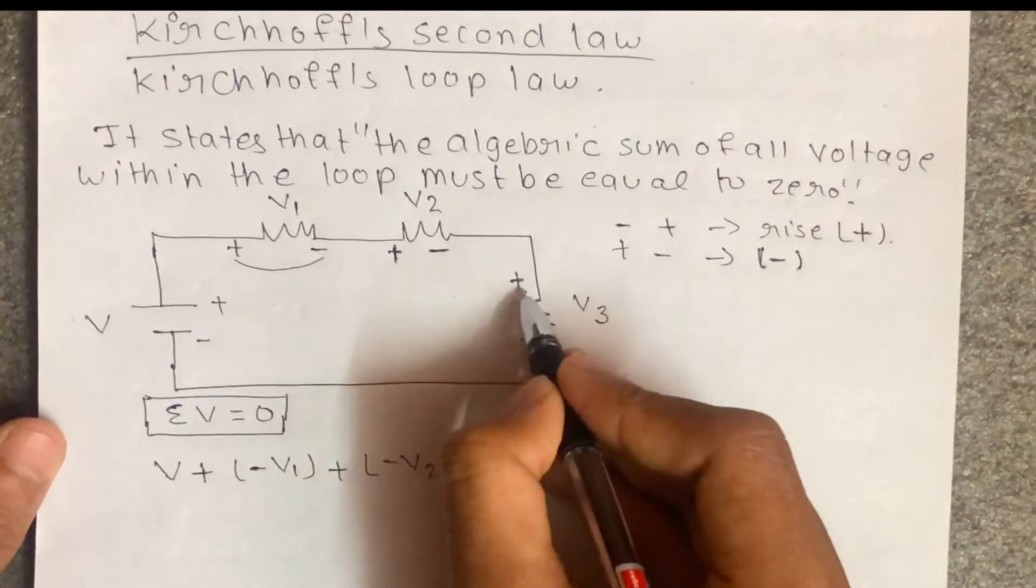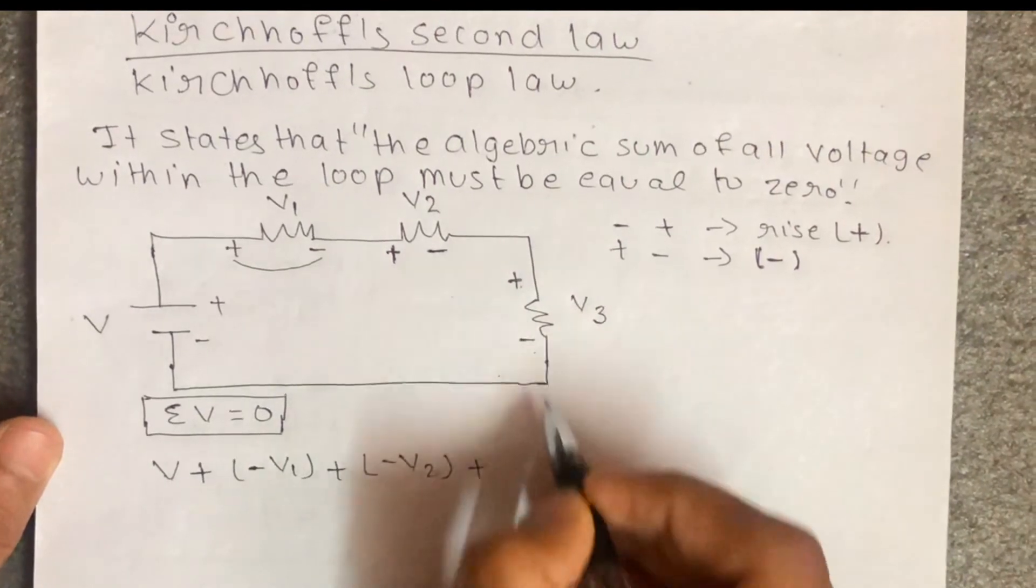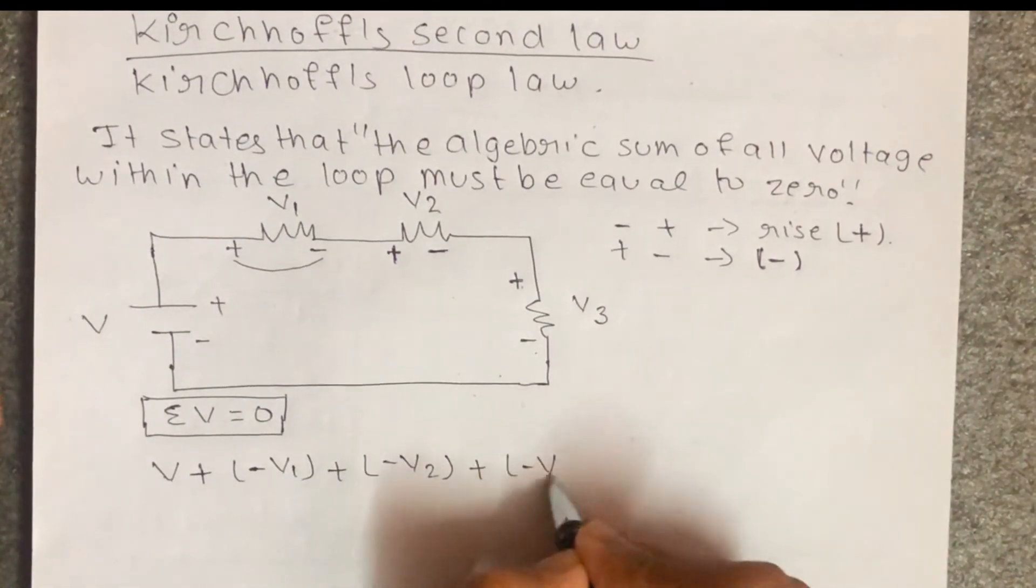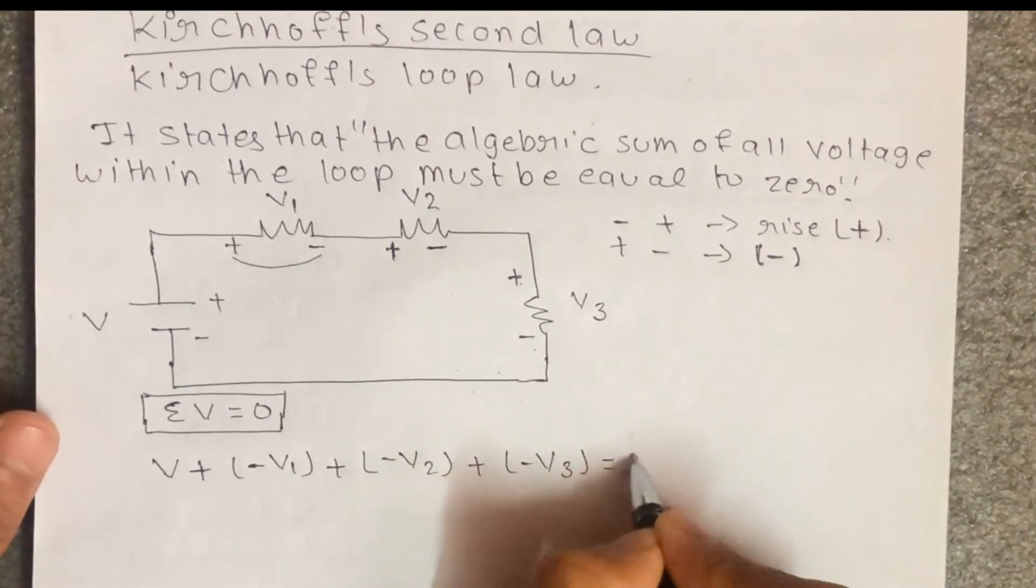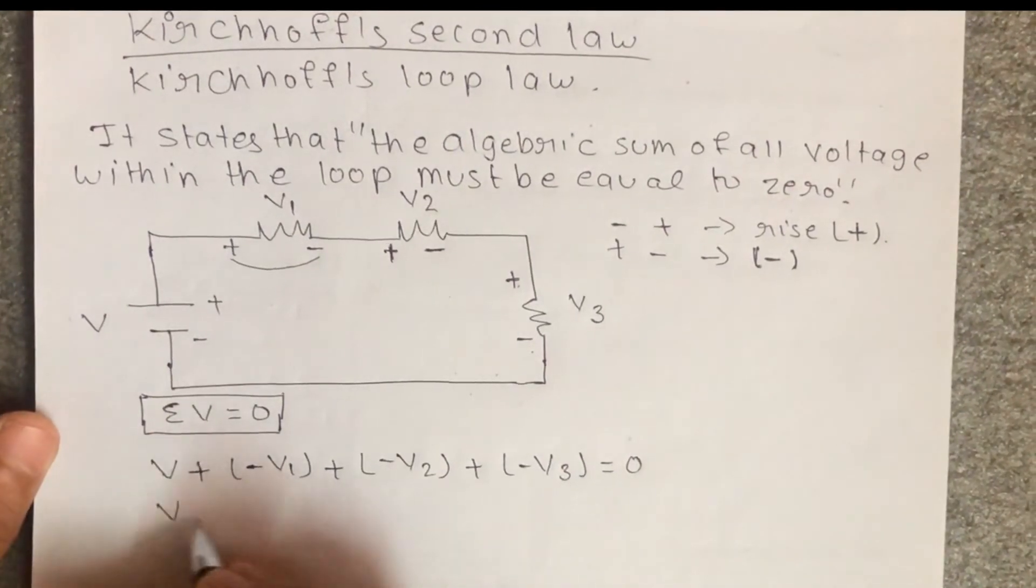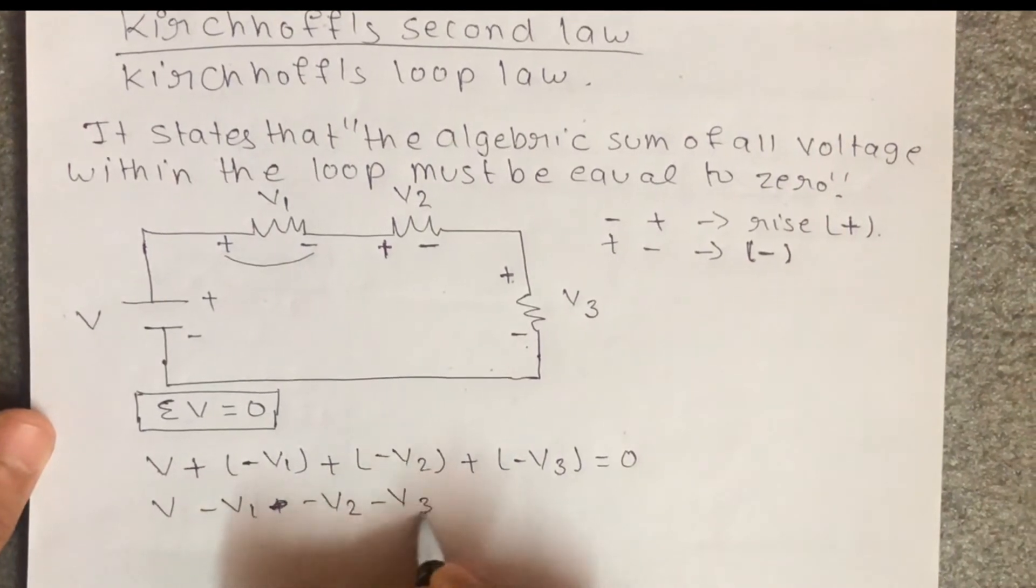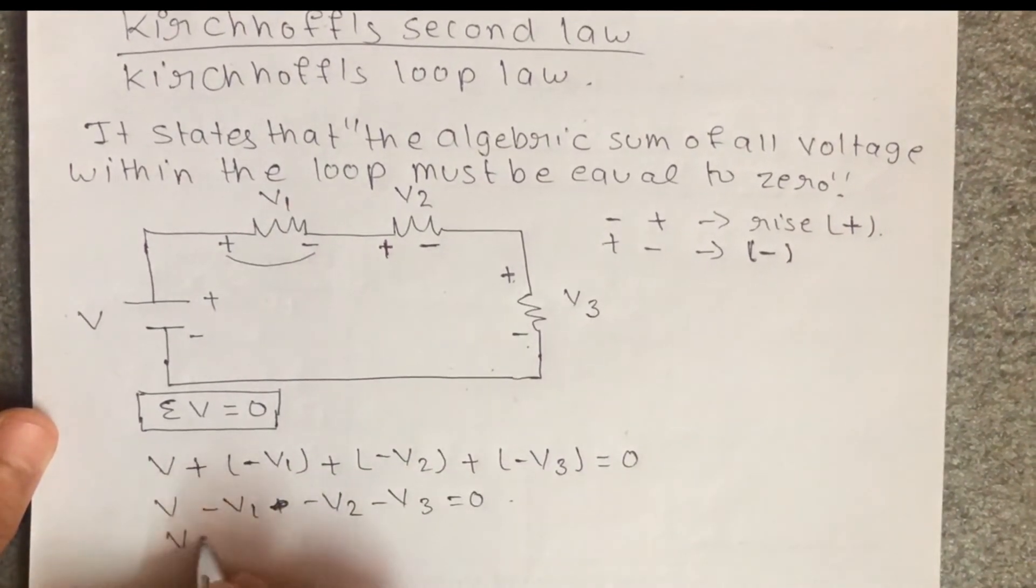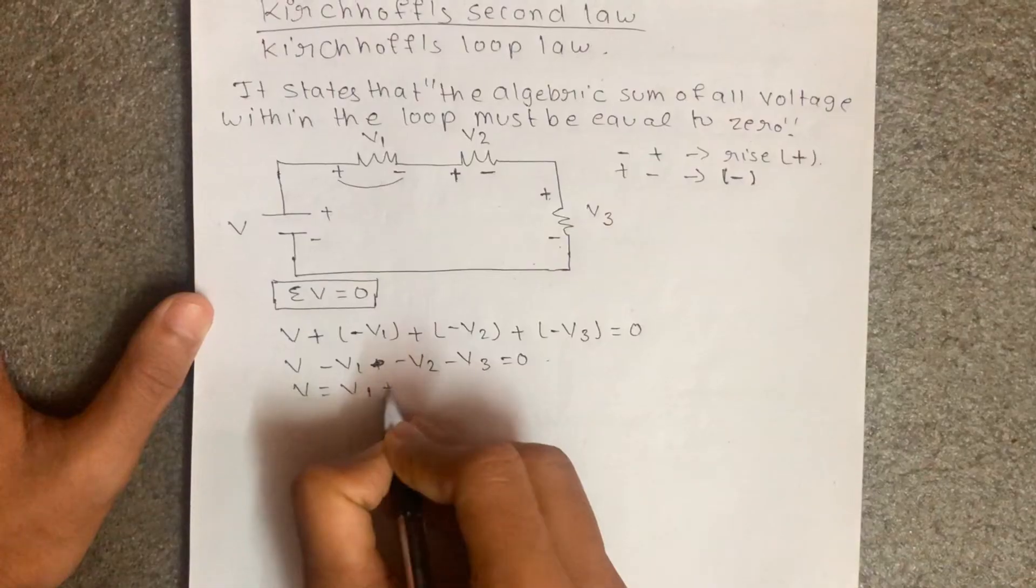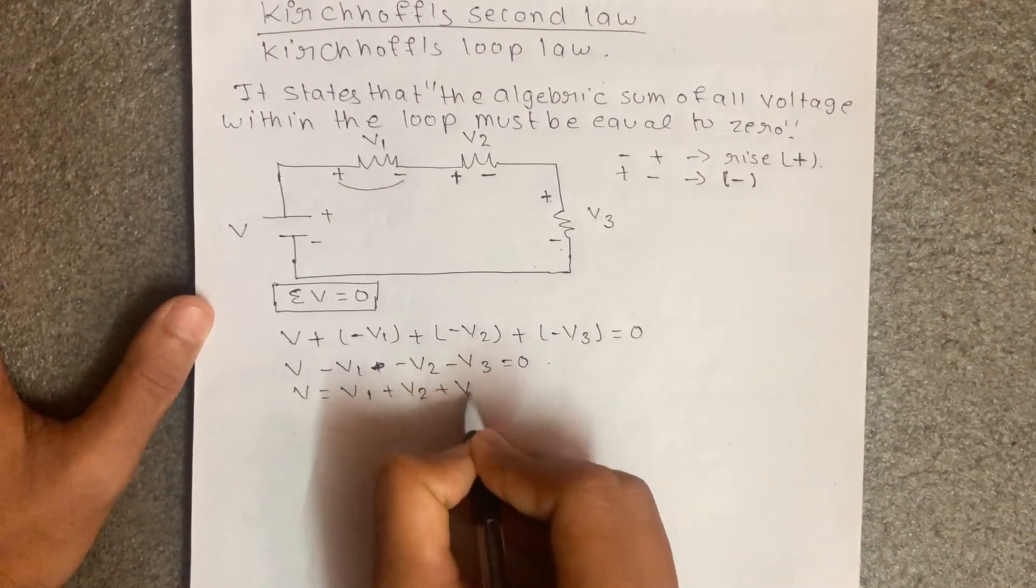Plus positive to negative equal to zero. Similarly minus V1 minus V2 minus V3 equal to zero, so V equal to V1 plus V2 plus V3.